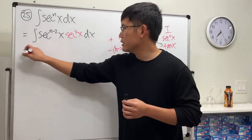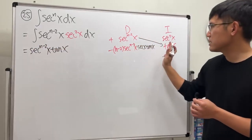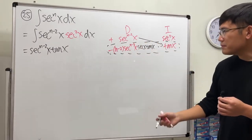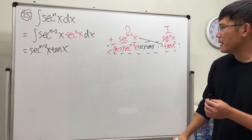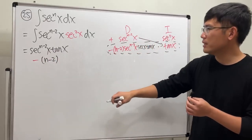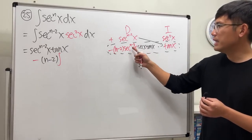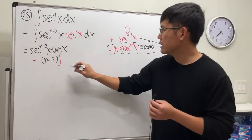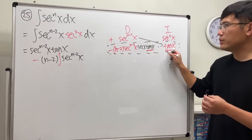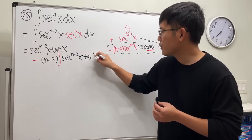The first part of the answer is secant to the n minus 2 of x times tangent x. Multiplying the remaining terms together and putting them into the integration gives us minus n minus 2 times the integral of secant to the n minus 2 of x times tangent square x dx.